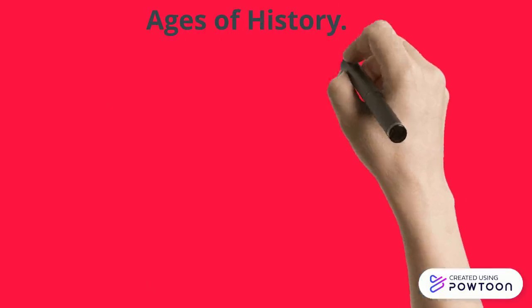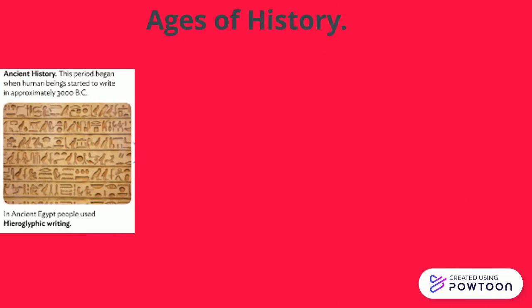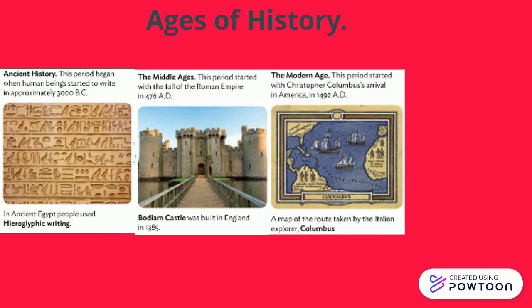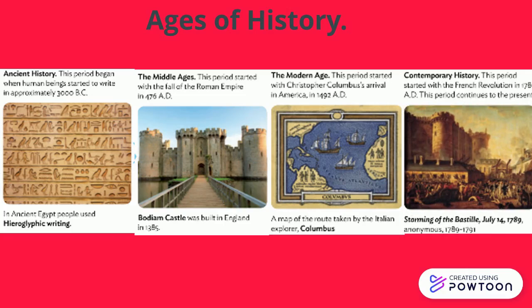These are the ages of history. The first one is ancient history, and it begins with the starting of writing by human beings. Then we've got the Middle Ages, which started with the fall of the Roman Empire. The modern age began with Christopher Columbus's arrival to America. And finally, the contemporary history, which started with the French Revolution.